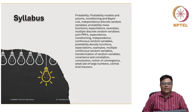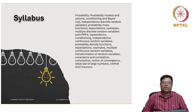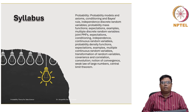So what will we learn here? The syllabus is given. We will start with probability, probability models, conditioning, and Bayes' theorem. We will learn conditional probability, independence, discrete random variables, and probability mass functions. We will learn expectation examples, multiple random variables for discrete case, probability density functions for continuous case, independence of random variables, their expectation, multiple continuous random variables, continuous transformation of random variables, covariance, correlation, convolution, and finally the notion of convergence, weak law of large numbers, and central limit theorem.